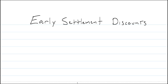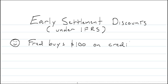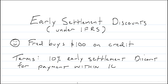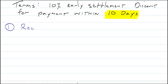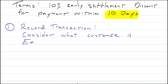We are looking at early settlement discounts, also known as prompt payment discounts under IFRS. Let's look at a basic scenario. My customer, Fred, buys $100 worth of goods and our terms for early settlement are 10% if you pay within 10 days. To record the transaction, we need to consider what the customer will do. We look at the customer's past experience and we use judgment — do we think the customer will pay early or will they pay later? And we book the transaction according to what we think they will do.